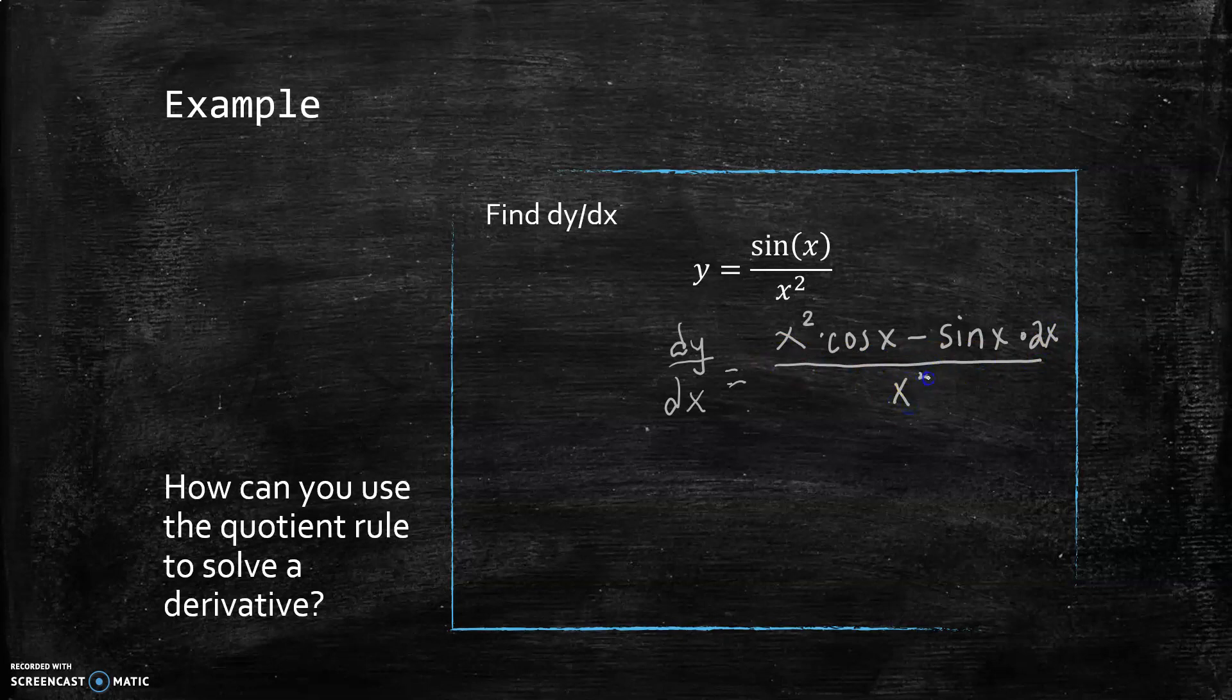It would be low D high minus high D low all over the square of what's below. In this particular case, I often see students try to say 'oh well I have a squared here and a fourth here so I can cancel,' but you can't because there's subtraction. You can cancel if you can turn it into multiplication, so if you can factor something out of the numerator, which we can—we can get an x out of the numerator—then we can cancel.